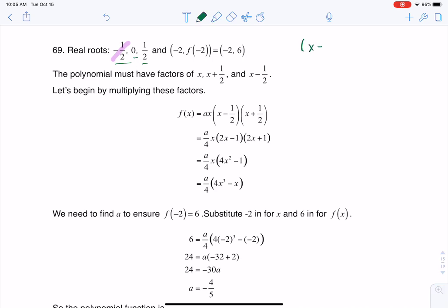That means the factor that goes with it is x minus negative one-half, right? And if I want to simplify that a little bit, that would be x plus one-half. That's where you're seeing that factor show up. If we want to talk about x having, or the polynomial having a real root at zero, then I would have a factor of x minus zero, but we just write that as x, so that's where you see that coming through. And similarly, we have one-half getting us this factor of x minus one-half.